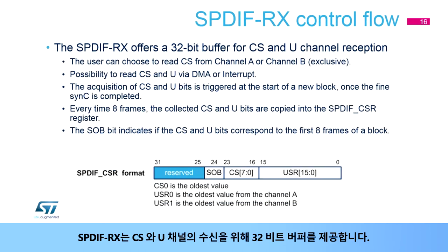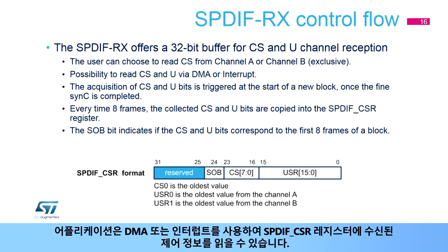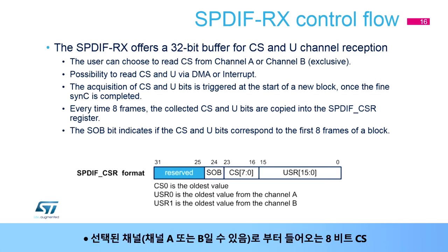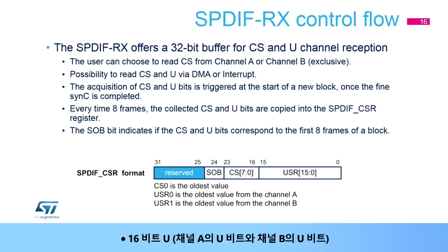The SPDIFRX offers a 32-bit buffer for the reception of the CS and U channels. The application can read the received control information in the SPDIF-CSR register using DMA or interrupts. The SPDIF-CSR register contains 8 bits of CS from the selected channel (A or B), 16 bits of U comprising the U-bit of channel A and U-bits from channel B, and 1 bit indicating if a start of block has been detected.